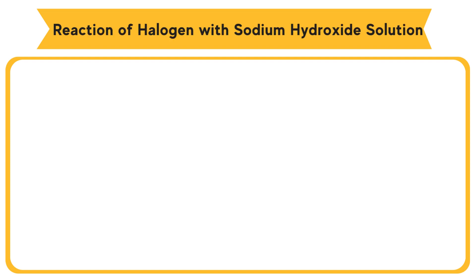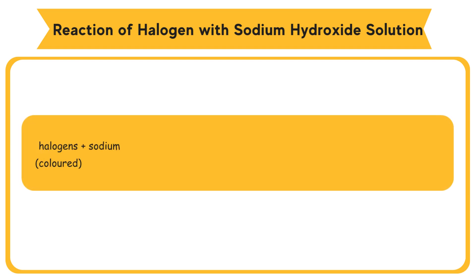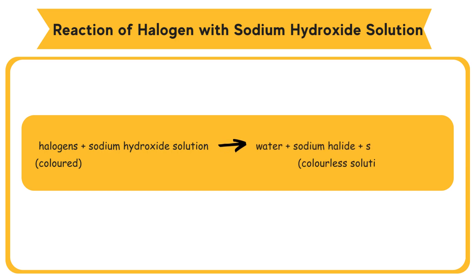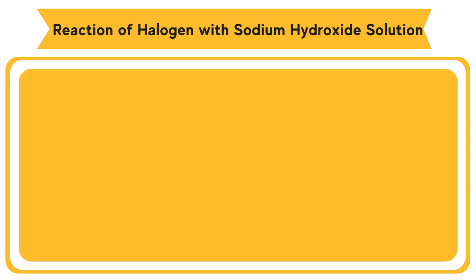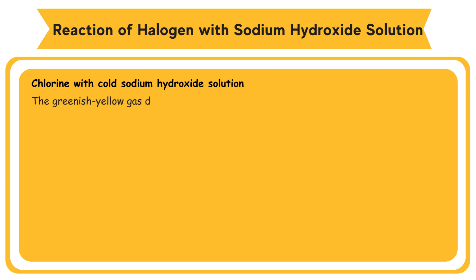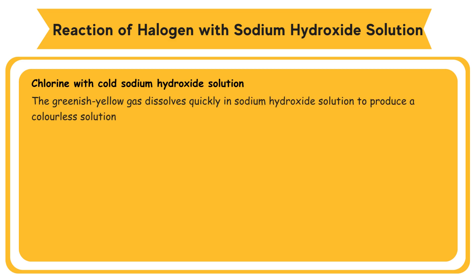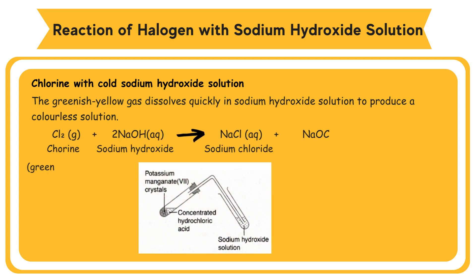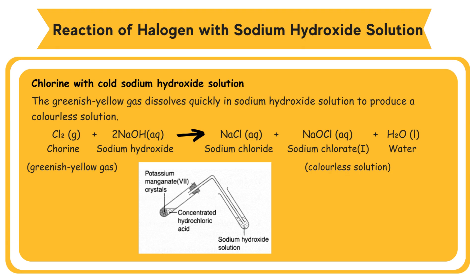Reaction of halogens with sodium hydroxide solution: the colored halogens react with sodium hydroxide solution to produce water and a colorless solution containing sodium halide and sodium halite. For chlorine with cold sodium hydroxide solution: the greenish-yellow gas dissolves quickly in sodium hydroxide solution to produce a colorless solution. Chlorine reacts with sodium hydroxide to produce sodium chloride, sodium chlorate(I), and water. Sodium chlorate(I) (NaOCl) is also known as sodium hypochlorite.